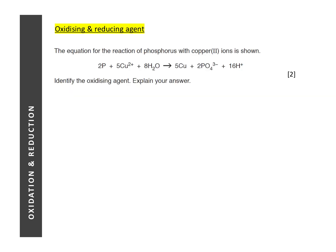Now we will look at questions involving oxidizing and reducing agents. The easiest way to identify them is this: an oxidizing agent is the substance that is reduced in the reaction. So to identify the oxidizing agent, we look for the substance that is reduced. Looking at the reaction, copper(II) ions have been reduced to copper.